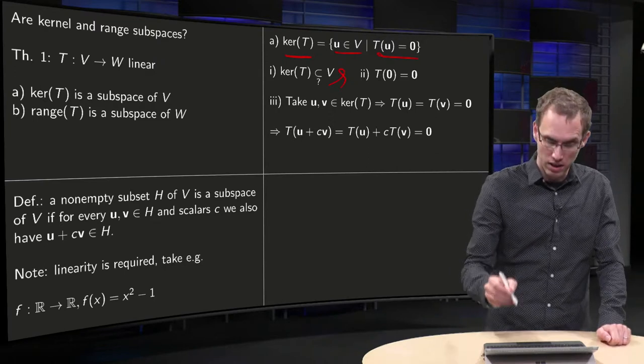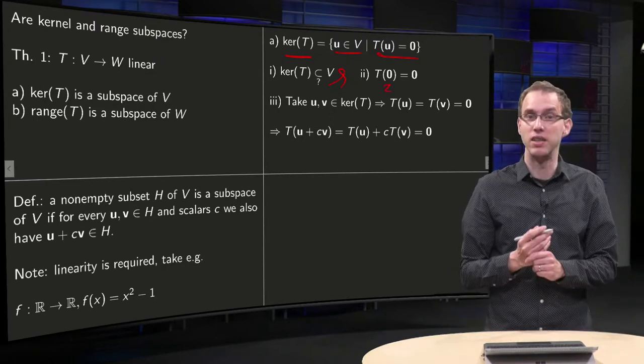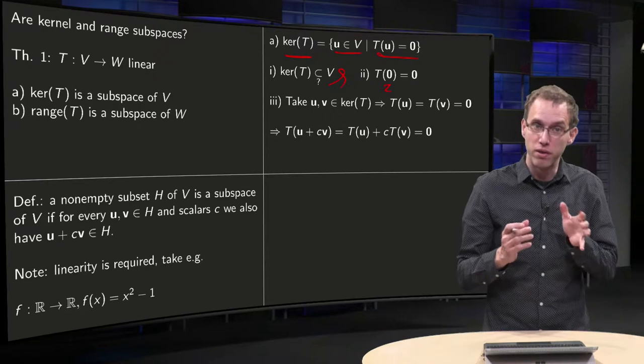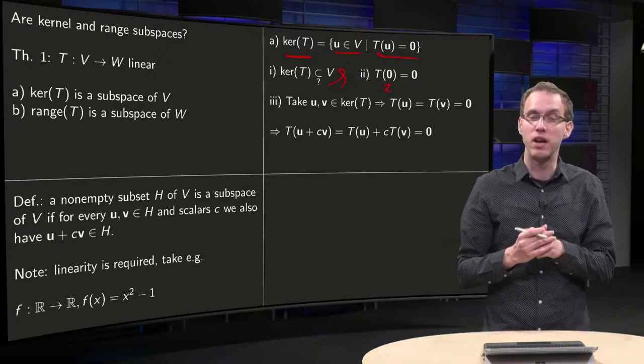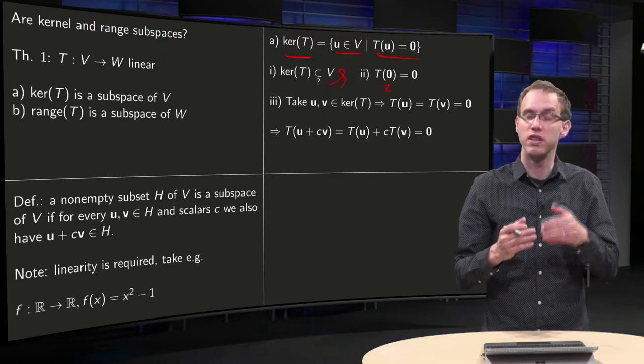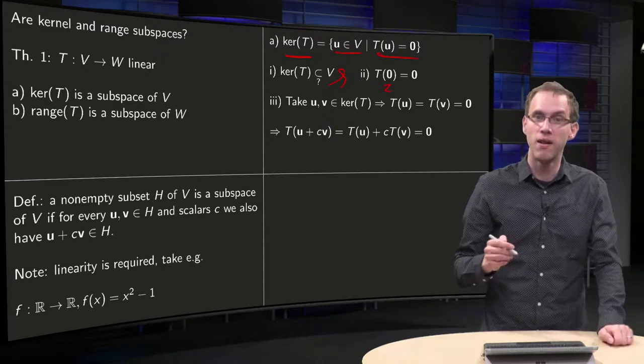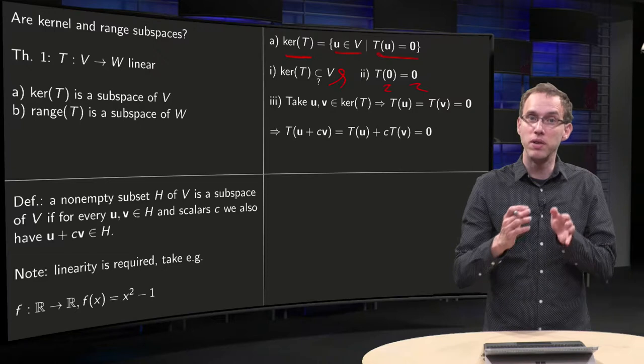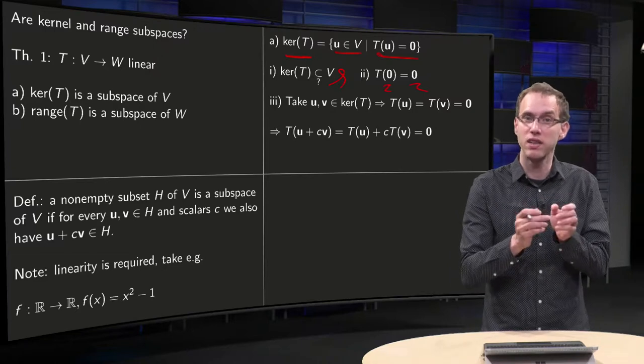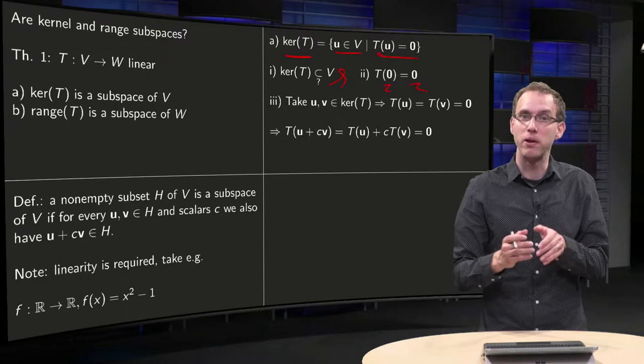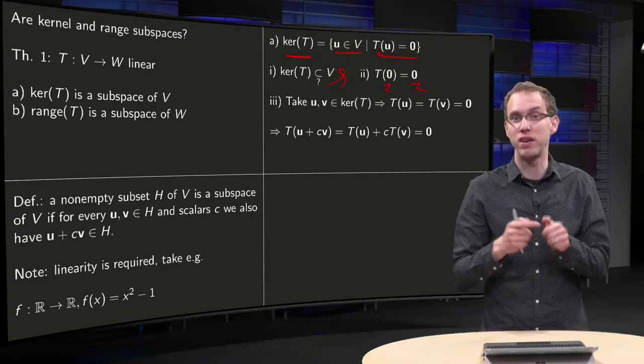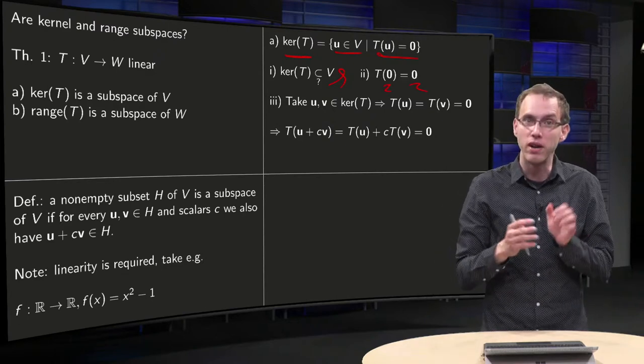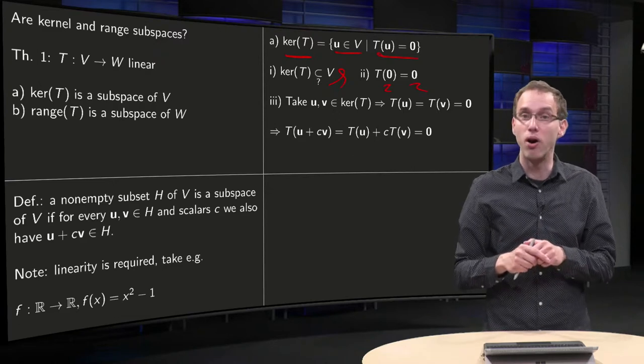We know that the zero vector is in the domain because we have a transformation from V to W. V is a vector space, so zero is always in there. We know that T is linear, so T of zero is zero. That means that we have at least one vector, the zero vector, which is mapped to zero. That means that the kernel is not empty. There is at least one vector in it, namely the zero vector, because that one is already mapped to the zero vector.